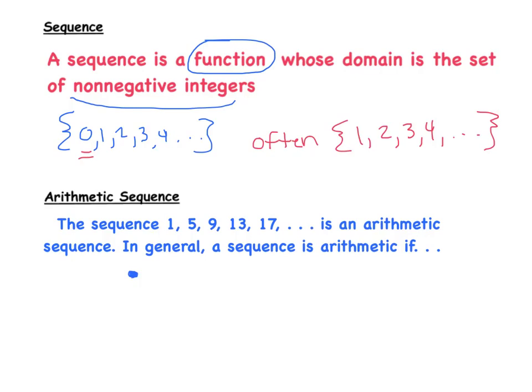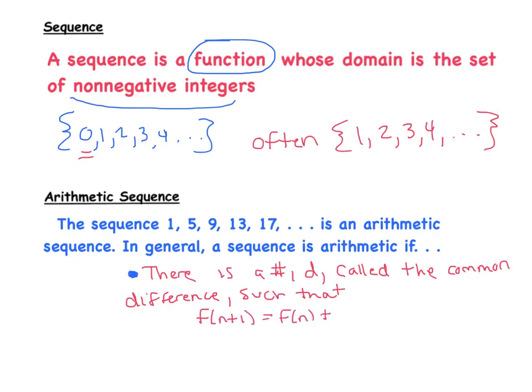Now in particular, an arithmetic sequence such as the one we just listed—1, 5, 9, 13, 17—sequences in general are arithmetic if the following conditions are met. So the first condition is that there is a number d called the common difference, and f of n+1 is equal to f of n plus that common difference for all n bigger than zero. So that's the definition of an arithmetic sequence, and what I want you to relate to an arithmetic sequence is a linear function. Think linear function.